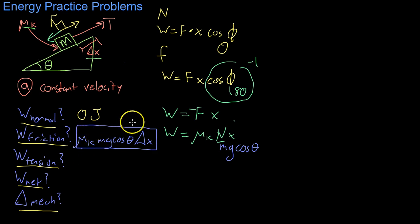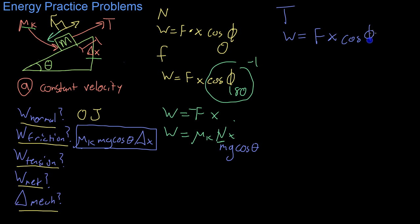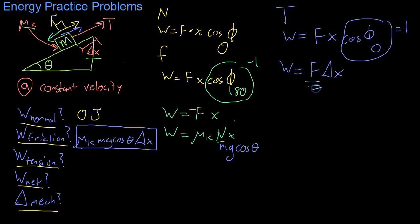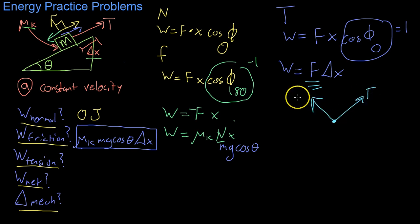Moving on, we look at the work done by the tension. Setting up the same equation, the tension acts in the same direction as motion, so phi equals 0 degrees, meaning cosine phi equals 1. Therefore the work equals the tension force times the distance traveled. However, we don't necessarily know the tension force, so we have to solve for it using an FBD.